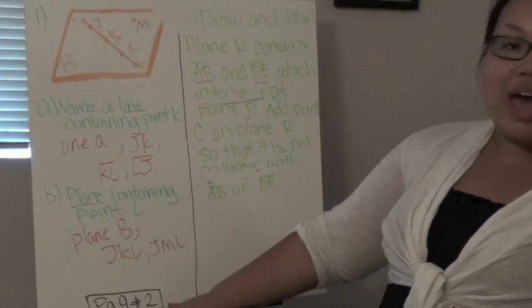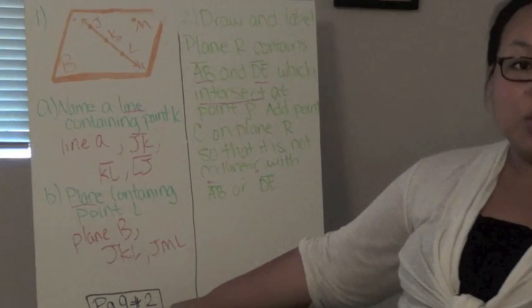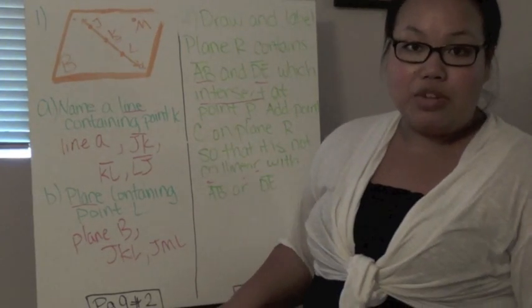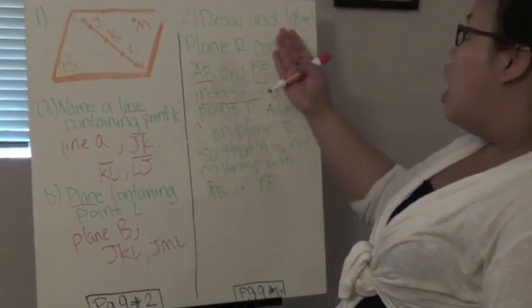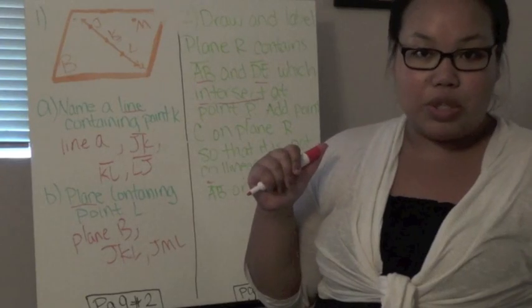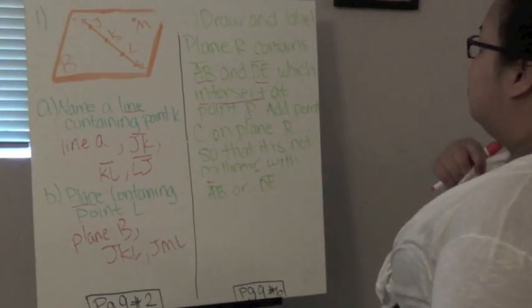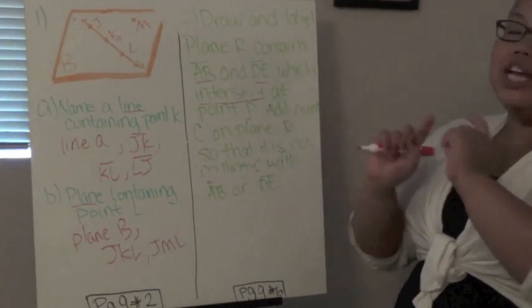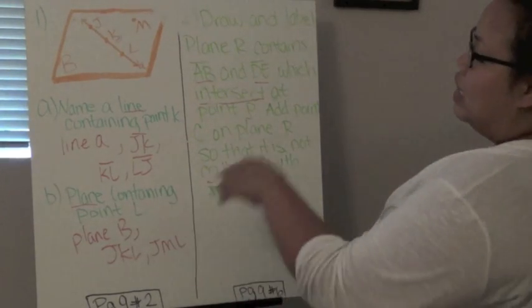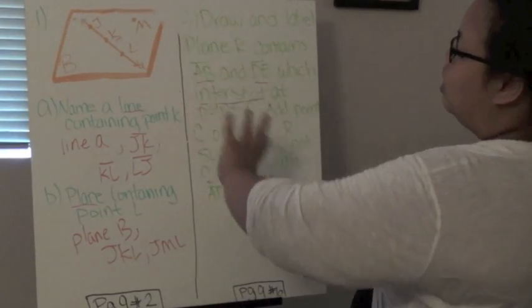When you're done with that, go ahead and try page nine, number two. And when you think you've completed it and do the answer, play the video again, and we'll move on to number two. Number two is working actually backwards from number one. So in this case, they want you to answer questions on an image.